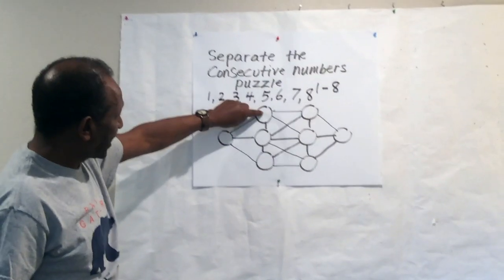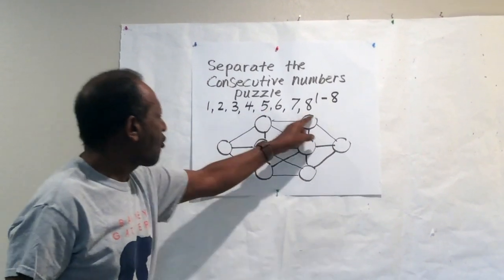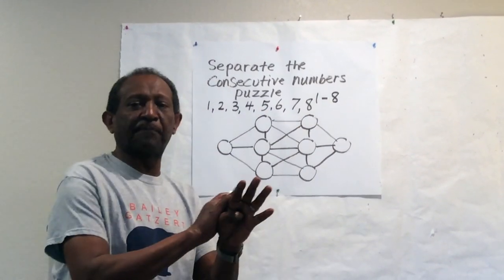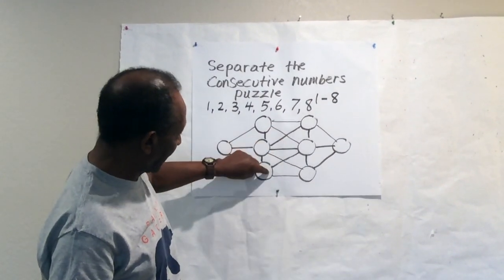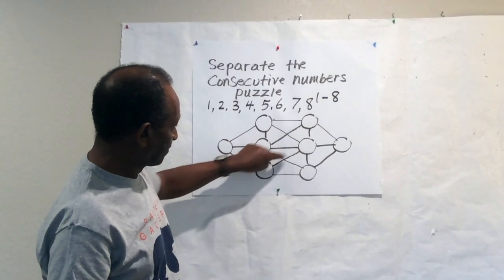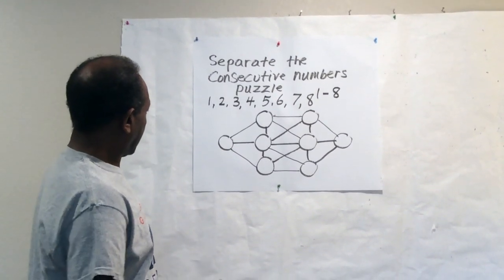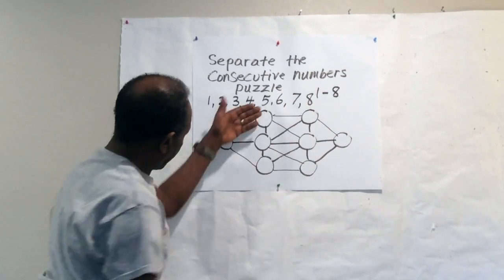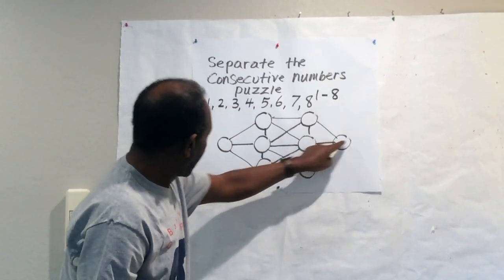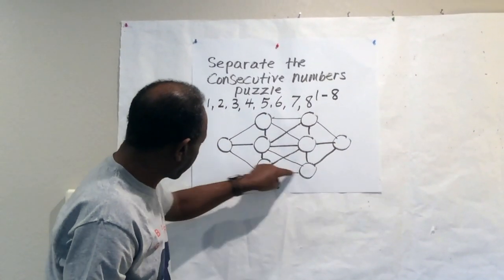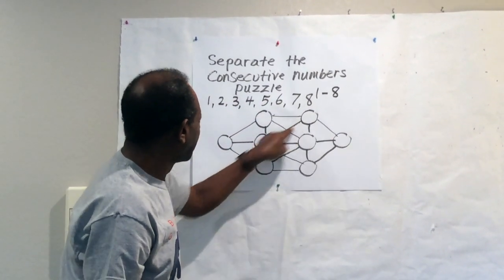For example, I can put one here, two here, three here, four here, five here — separate them so they will not be touched by a line. So make eight circles: three, three, and then two, then connect the outside circles, and then connect the inside circles.